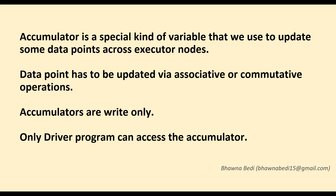This accumulator variable has to be updated by associative or commutative operations only. This variable is write-only. Whenever in Spark you're trying to do any kind of computation or ETL operations, your executors are trying to do some operation — for example an addition operation. The accumulator variable can be updated by all your executor nodes, but the update has to be associative or commutative. Associative means, for example, a+b+c equals c+b+a — both are the same.